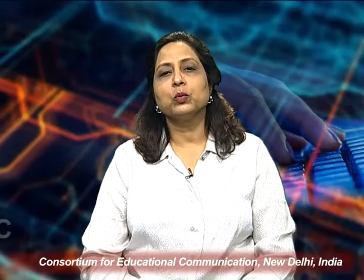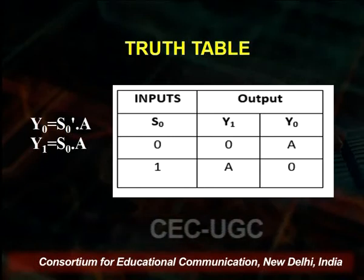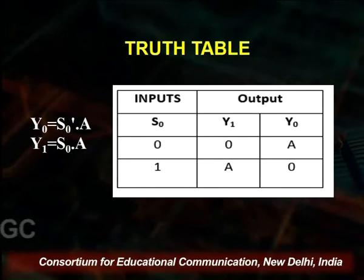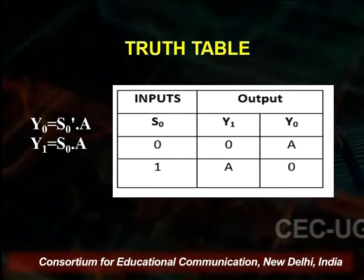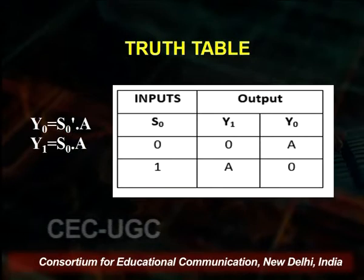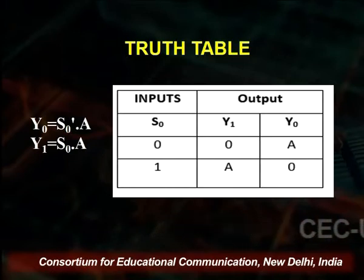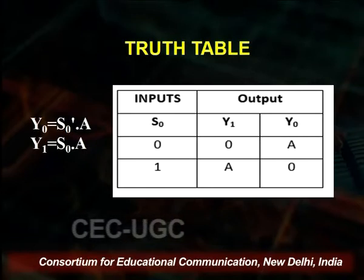Looking at the truth table: since we have only 1 selection line, S0 can take either a value of 0 or 1. On the output side we have 2 outputs for this 1×2 demultiplexer: Y1 and Y0. The expression for output Y0 is S0' · A (S0 complement AND A), and Y1 is represented as S0 · A.